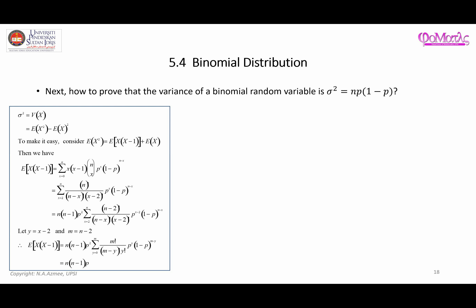Hi, assalamualaikum warahmatullahi wabarakatuh. In this video I'm going to demonstrate how you can prove that the variance of a binomial random variable is given by this expression, where n is the number of trials and p is the probability of success. If you feel like you want to try on your own first, here are some notes which you can refer to as a guideline.